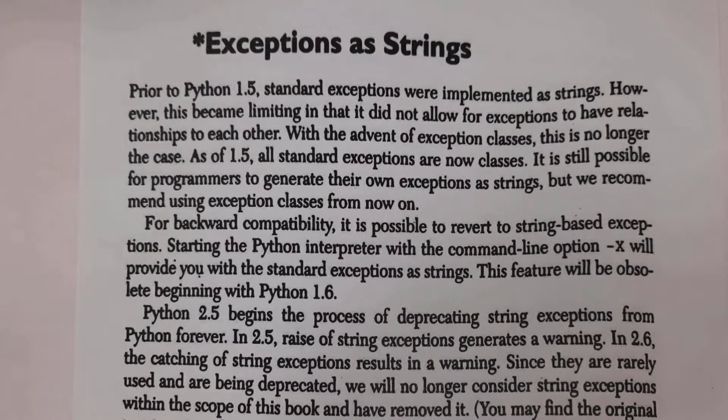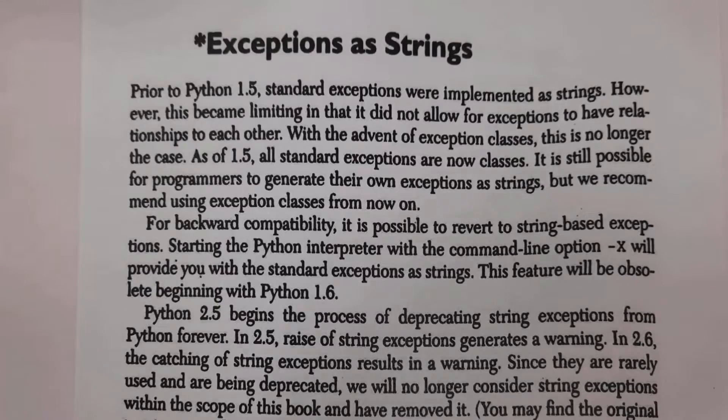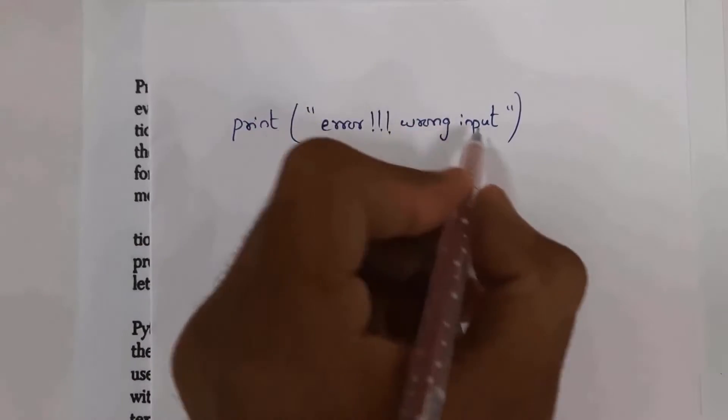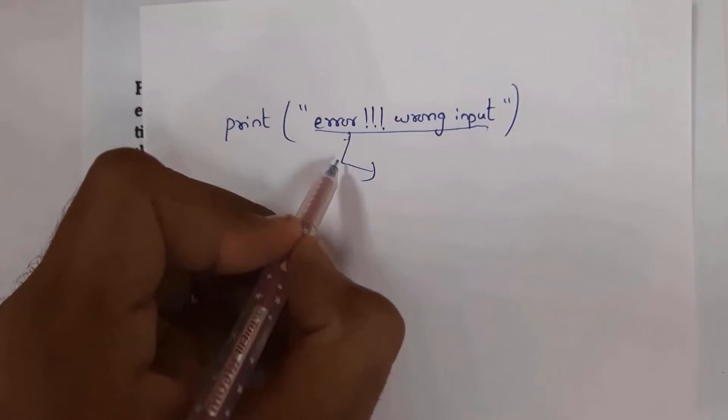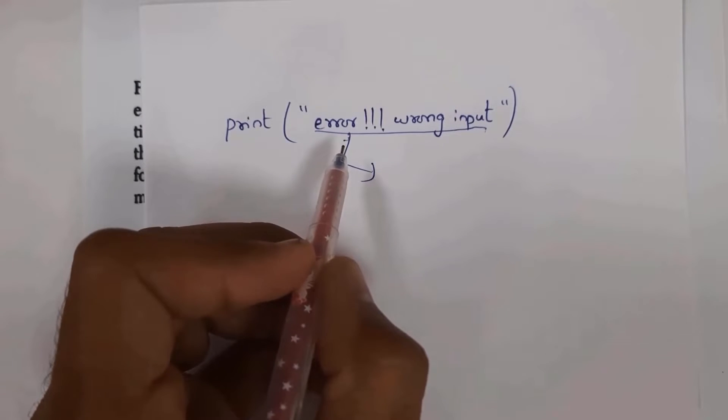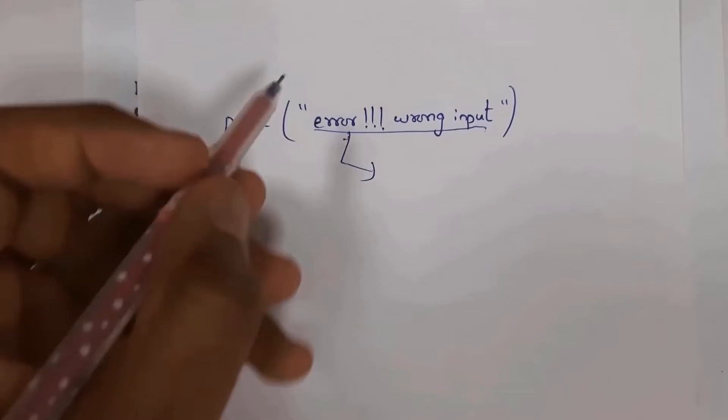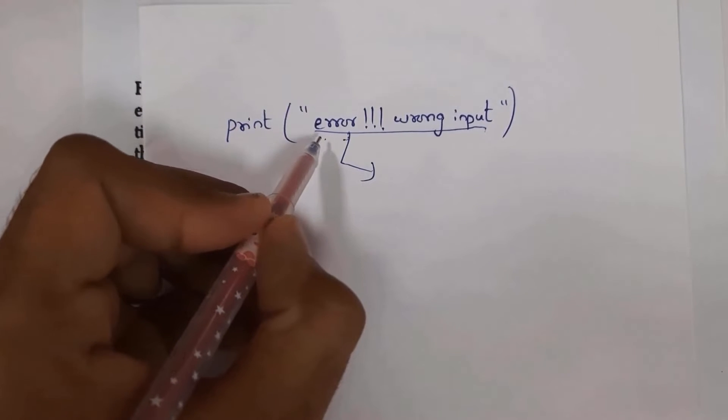First, I'll explain exceptions as strings. Before Python version 1.5, programmers created their own exceptions using strings. For example, I created an exception using strings. In double quotations, I wrote 'error wrong input'. This is an exception created by me, but we don't consider it as an exception; we consider it as a string. There is no relationship between exceptions and strings.